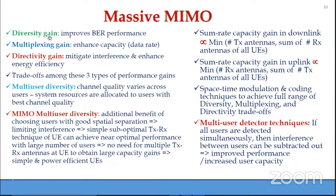We can achieve the trade-off using appropriate space-time encoding and modulation techniques to cover the full range of diversity-multiplexing-directivity trade-off. We can also use multi-user detection techniques — detecting user signals simultaneously rather than individually — so interference between users can be subtracted out, improving performance and increasing user capacity.